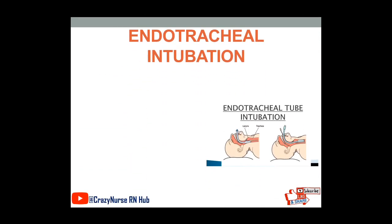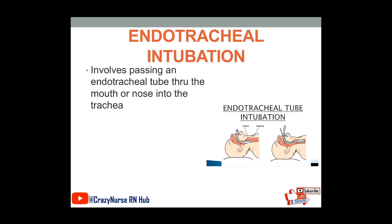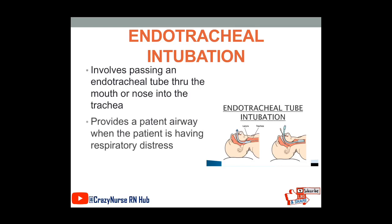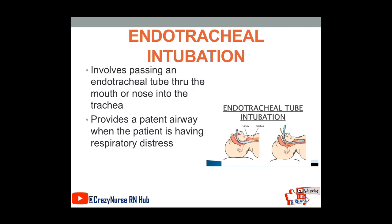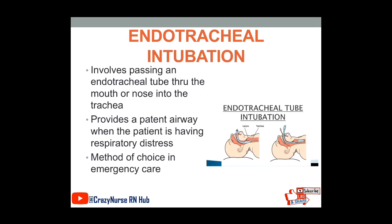We also have endotracheal intubation. It involves passing an endotracheal tube through the mouth or nose into the trachea. It provides a patent airway when the patient is having respiratory distress. The endotracheal tube serves as the artificial airway for patients who are experiencing respiratory distress or difficulties, and it is the method of choice in emergency care.